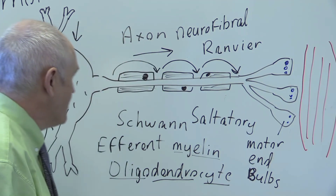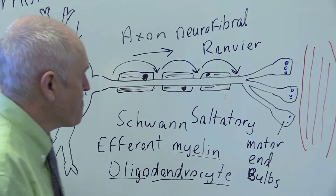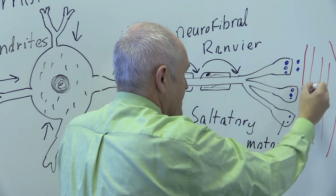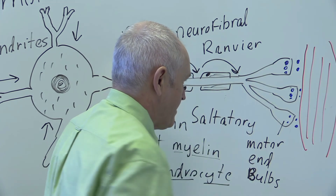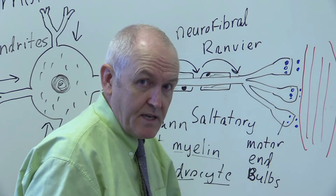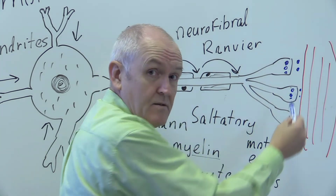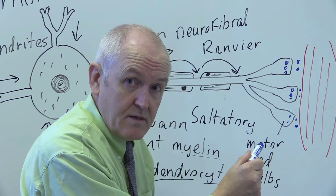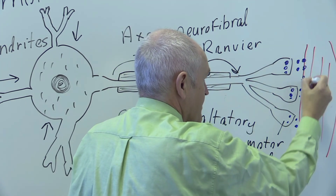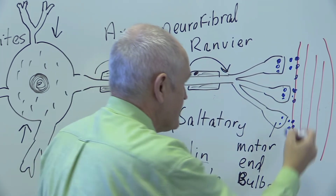When the motor impulse — the neuronal impulse — arrives here in electrical form going down towards the muscle, that stimulates the release of the chemical transmitter. That chemical transmitter goes into the synaptic gap between the motor end bulbs and the muscle. The gap is very small so it diffuses quickly. This transmitter chemical is called acetylcholine, and it arrives at the motor end plates on the muscle where there are specialized receptor sites on the surface of the muscle to receive it.